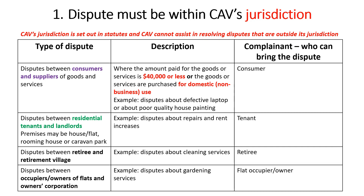The second main kind of dispute that Consumer Affairs Victoria has jurisdiction over is disputes between tenants and landlords in relation to residential properties. In such a case, a tenant — that is, someone who rents a house, flat, room in a rooming house, or caravan in a caravan park — can request Consumer Affairs Victoria to assist them to resolve a dispute with their landlord. For example, a tenant might have a dispute with their landlord about repairs to the house they are renting, or about an increase in rent.